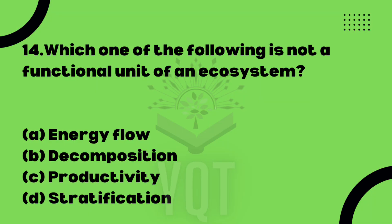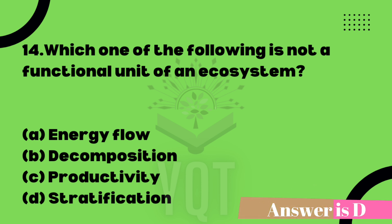Next question: which of the following is not a functional unit of an ecosystem? Option A: energy flow. Option B: decomposition. Option C: productivity. Option D: stratification. The four functional components of an ecosystem are energy flow, decomposition, productivity, and nutrient cycling. Stratification is not a functional component. The answer is Option D — stratification.